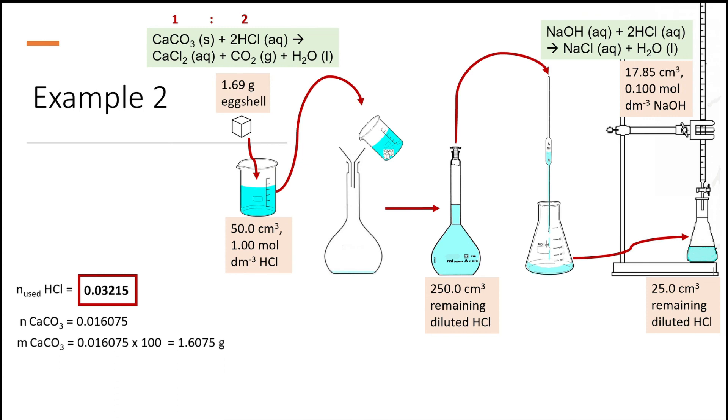Now we find the mass of calcium carbonate by multiplying the mole with the molar mass. And the percent purity is just the mass of pure calcium carbonate divided by the mass of eggshell times 100, and it gives us 95.1 percent.